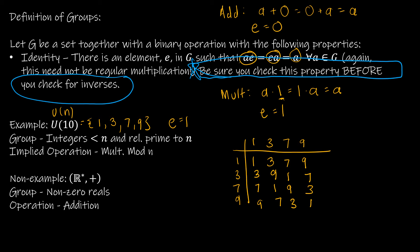Now let's take a look at a non-example. R-star means all the real numbers with the exception of zero — the non-zero reals. Why would that not have an identity under addition? Well, the additive identity is 0. Is 0 in the group of non-zero reals? No. So this would not be a group under addition because the identity is not included in the set.